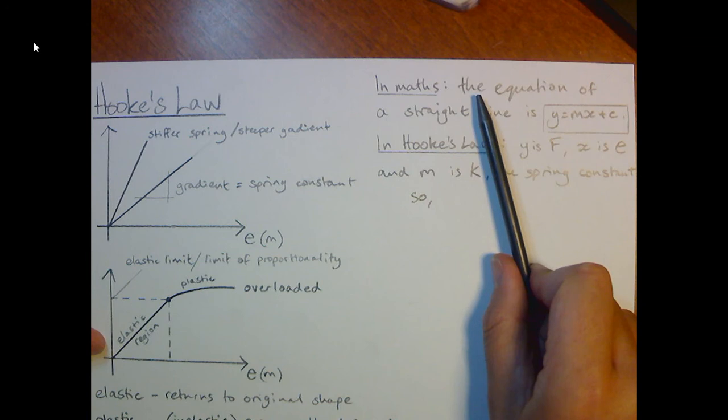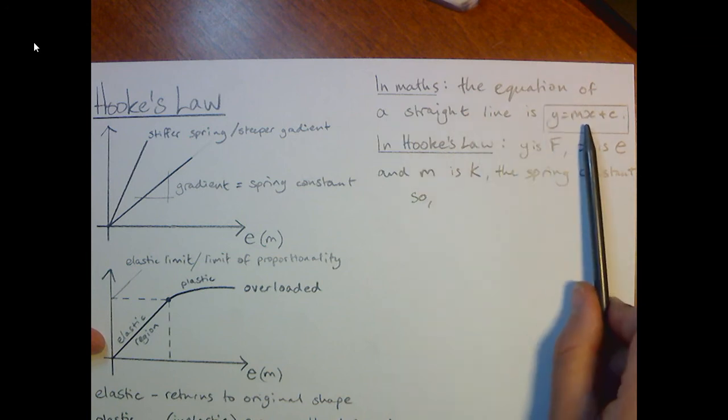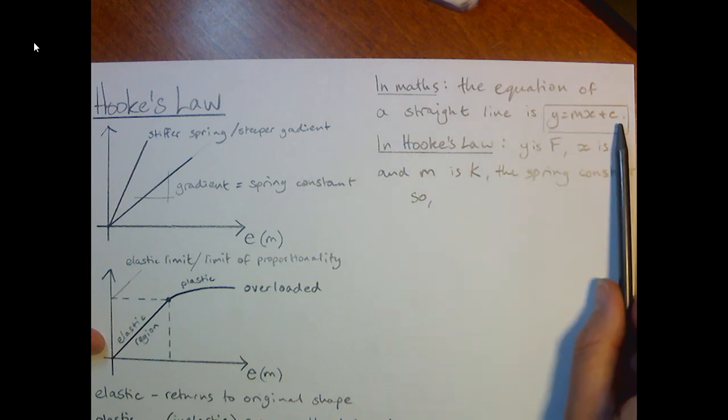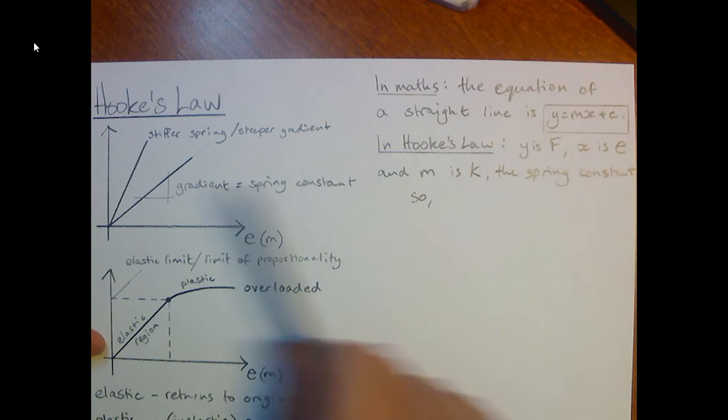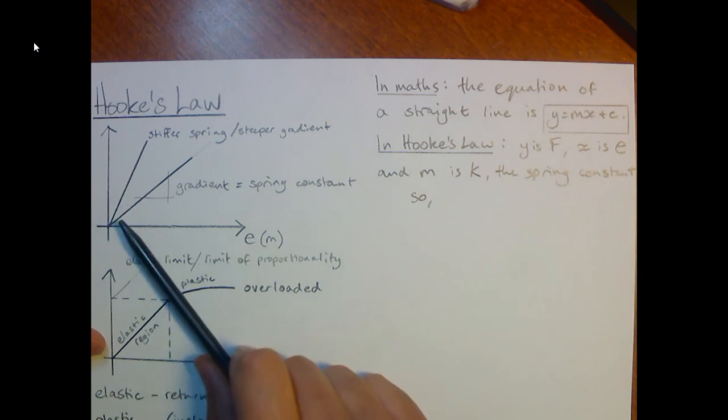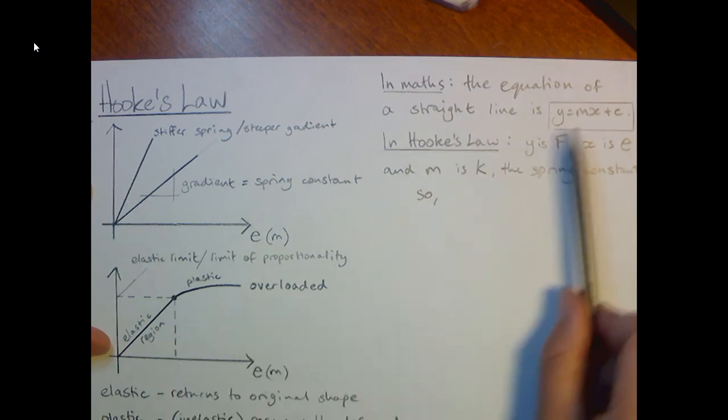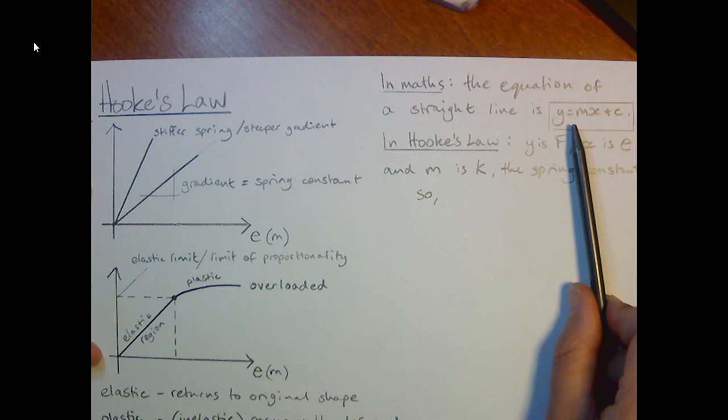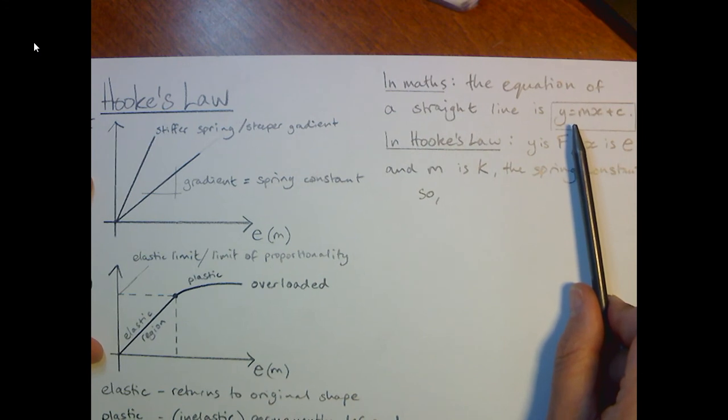The equation of a straight line is y equals mx plus c. So you can work out the equation of a straight line in maths using this formula. We use the same formula in physics because physics is what gives maths a reason, a purpose.